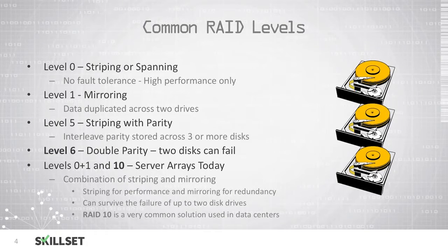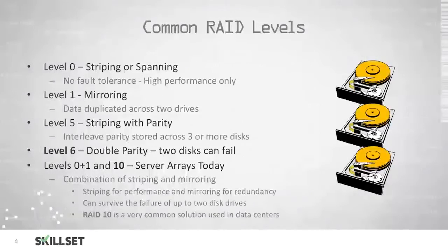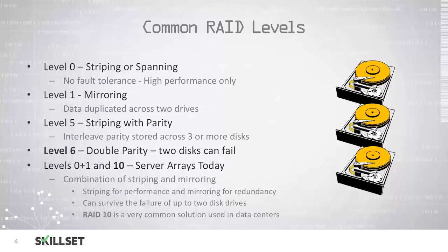If one of the drives in the array goes bad, you will lose data. With level 1, you have mirroring where there is an exact copy of your data on two hard drives. With RAID level 5, we have striping with parity, and we interleave parity across three or more disks.